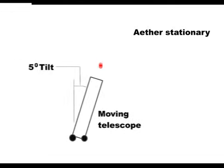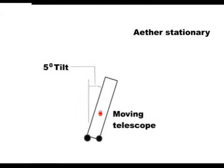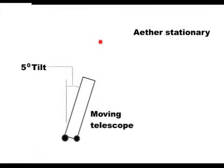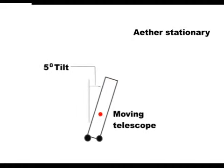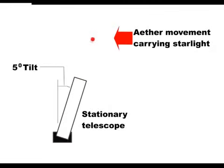Let us assume that the telescope was moving at 5 mph and had to be tipped 5 degrees. This 5 degree tipping, however, could equally be caused by the ether moving at 5 mph carrying the stars around the Earth.